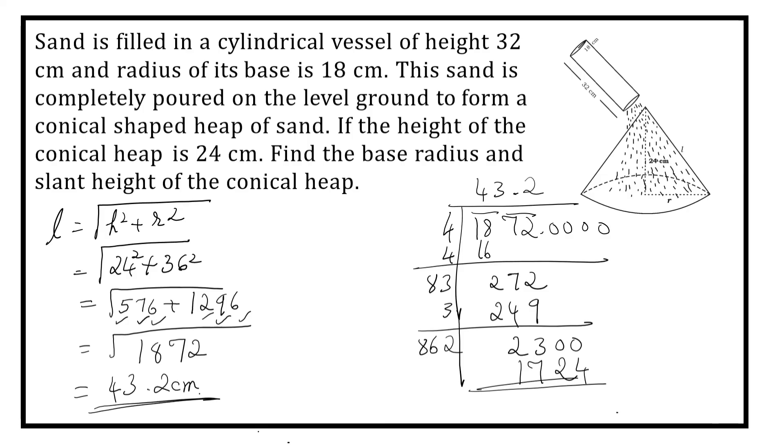So slant height of the conical heap is 43.2 cm. Radius also we found out, this is 36 cm.